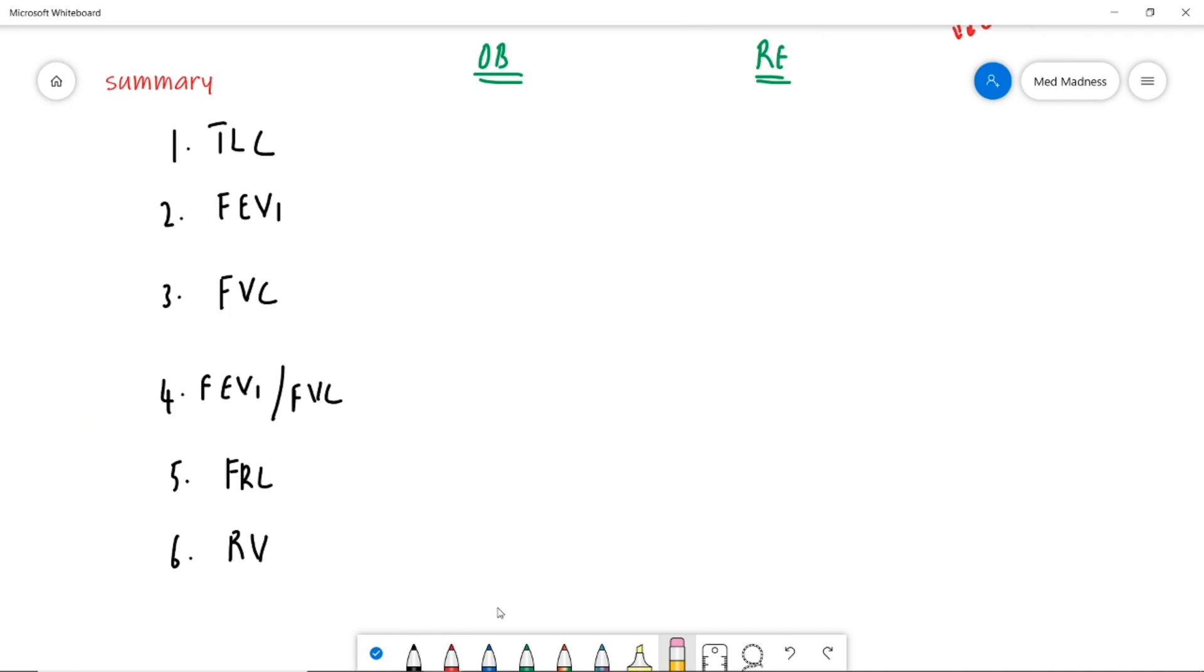Now, let's summarize. I want you to pause this video and try this exercise out. This is going to be real fun. Trust me. The total lung capacity in obstructive disease is increased because of air trap. In restrictive disease, it is decreased a lot.